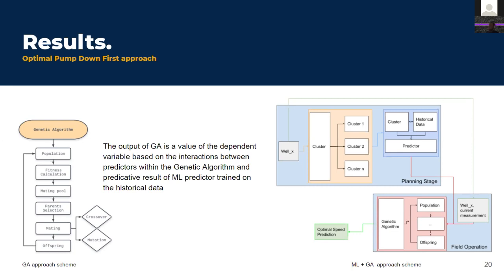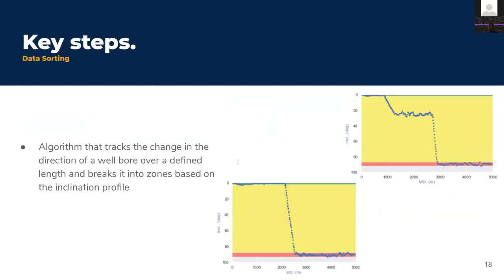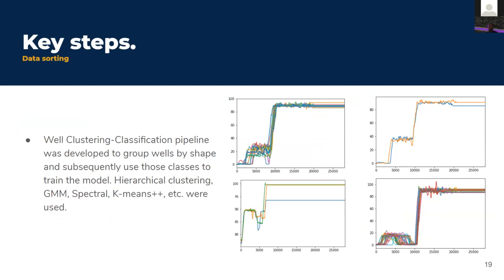A question asks the presenter to elaborate on how and why inferential statistics were run on clustering. Vlad clarifies they did not run inferential statistics on the clustering itself — rather, clustering was used to ensure wells of similar shape were compared to each other (apples to apples). Once wells were clustered into the same segment, inferential statistics were run on the historical runs through those wells to determine optimal operating parameters.